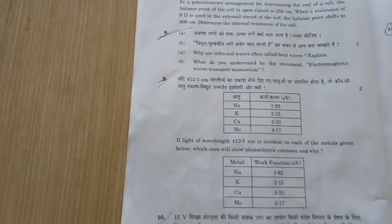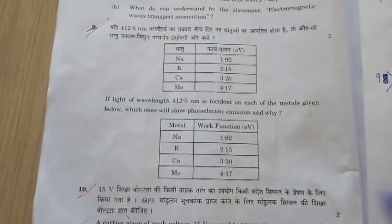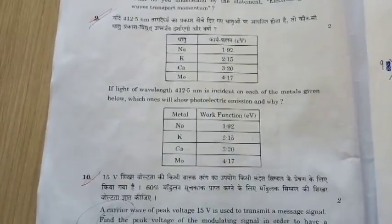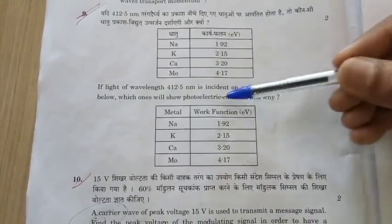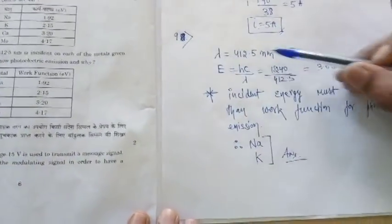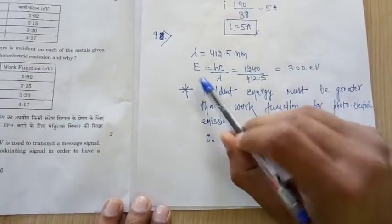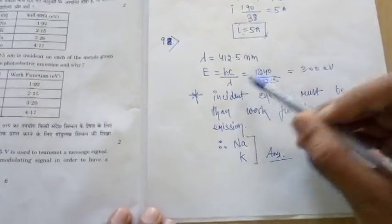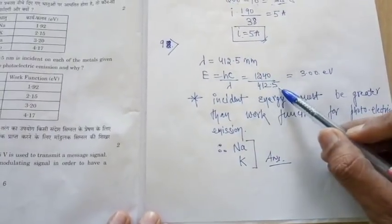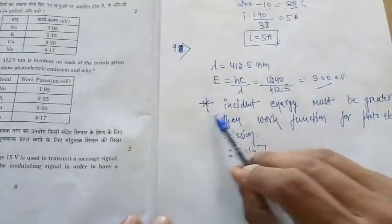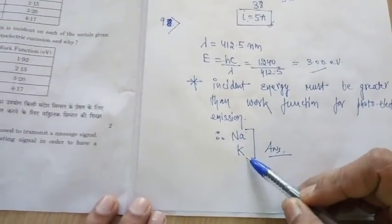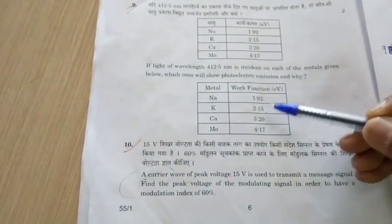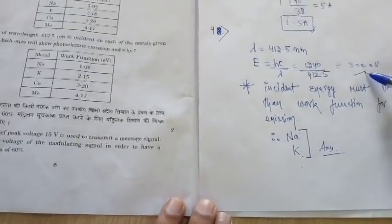Question 9: light of wavelength 412.5 nm is incident on a metal plate with different metals of different work functions — find which shows photoelectric emission. First calculate the energy: E = hc/λ, where hc = 1240, and λ = 412.5 nm, giving 3 electron volts. For photoelectric emission, incident energy must exceed the work function. Sodium and potassium have work functions less than 3 eV, so the answer is sodium and potassium.